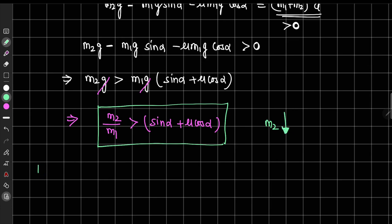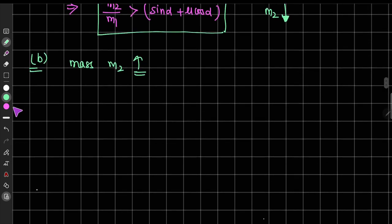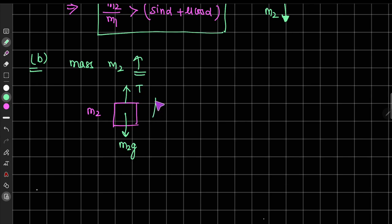Now let us take the case where mass m2 is going in the upward direction. The free body diagram of m2 has gravitational force m2g downward and tension T upward, with acceleration assumed upward. The force equation is: T minus m2g equals m2 times a. This is our third equation.